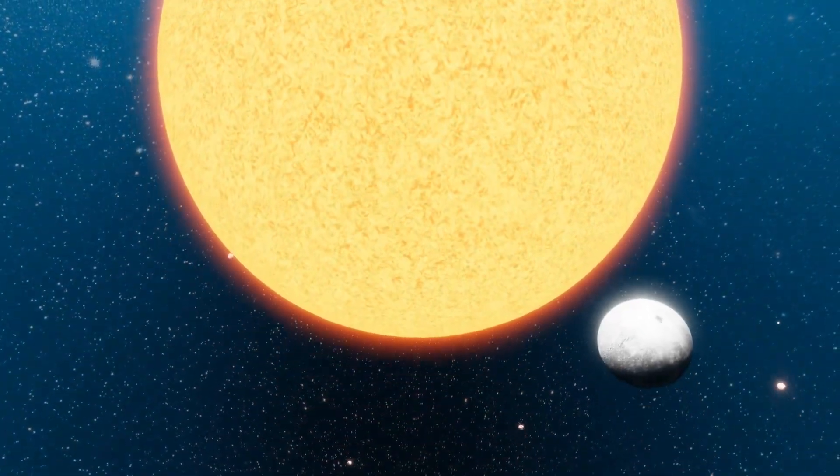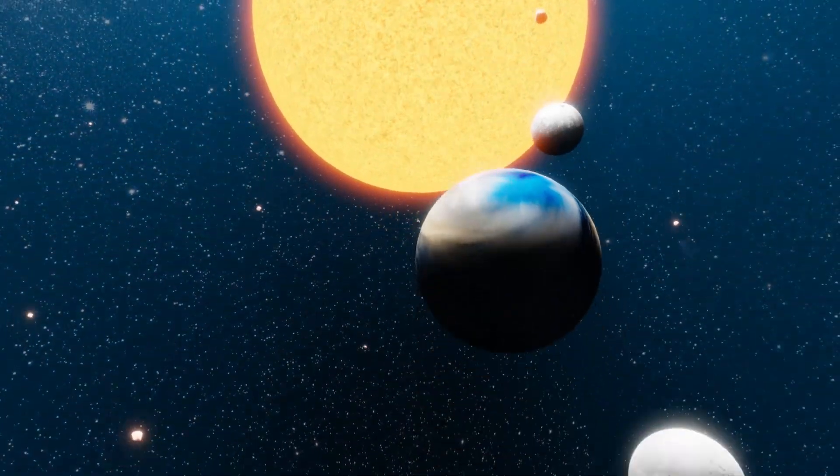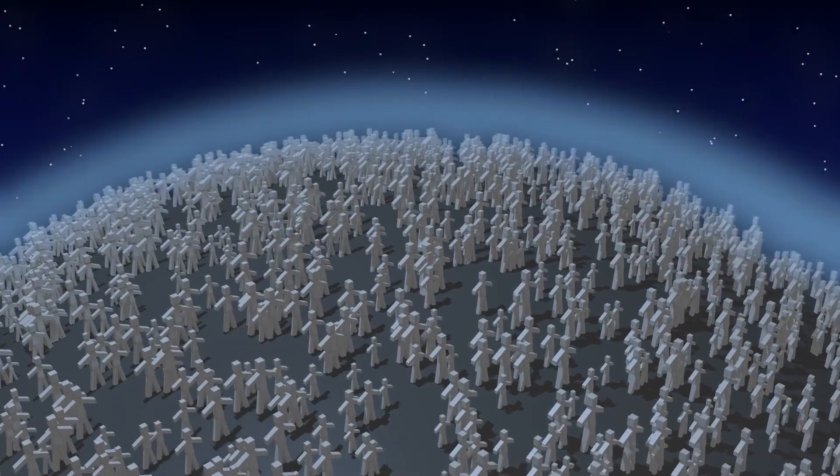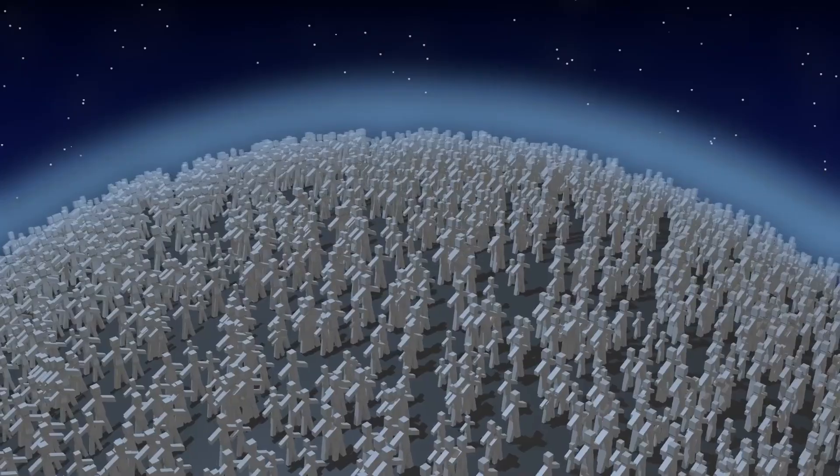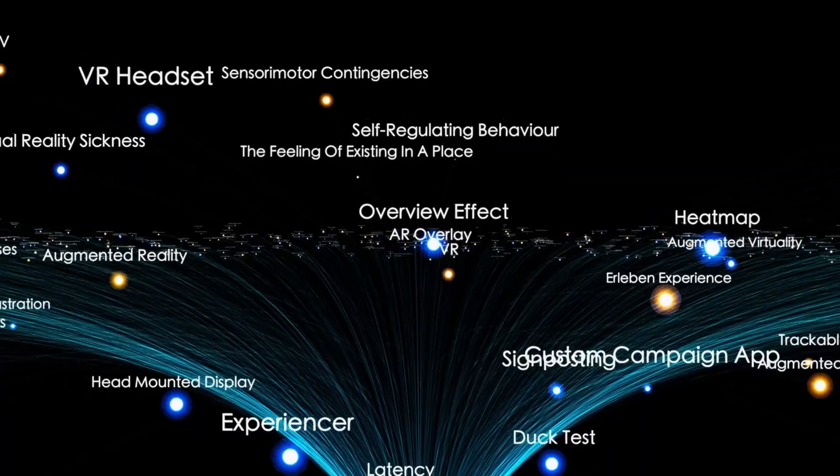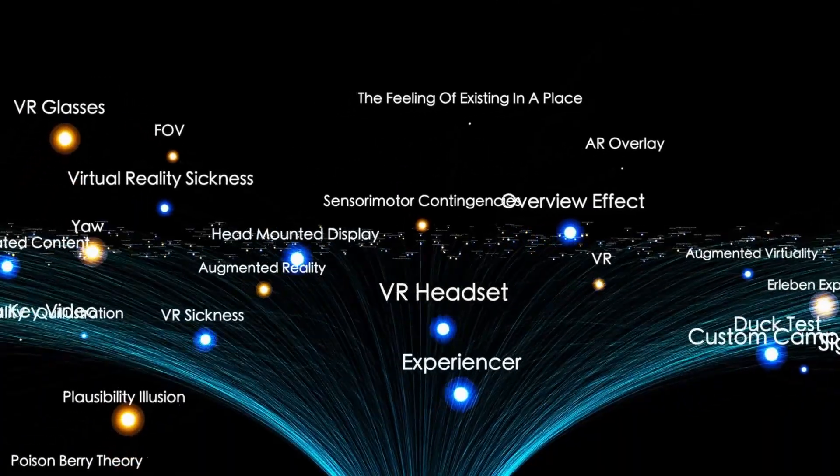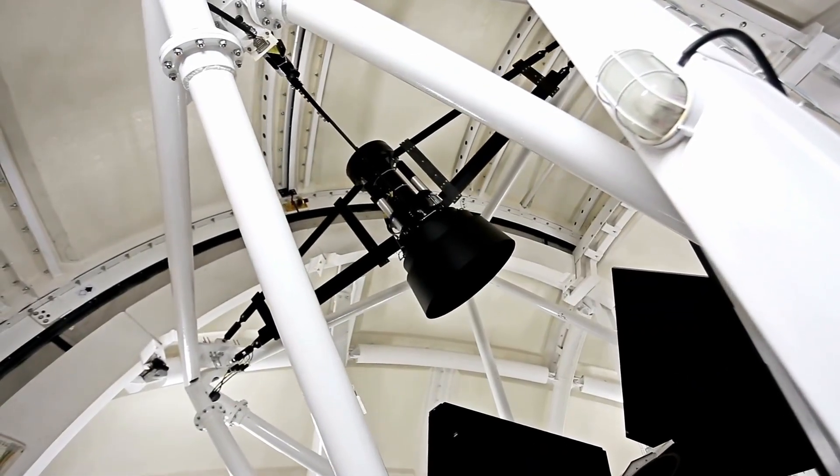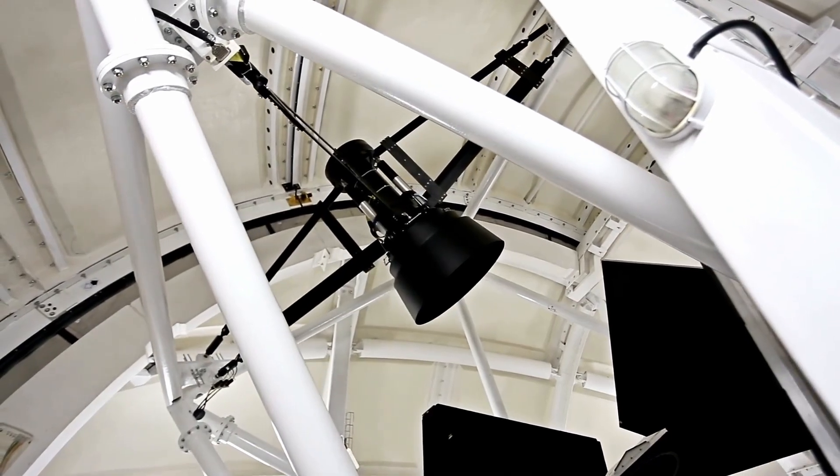And as if that weren't enough, artificial intelligence has joined the search, flagging patterns we don't understand, highlighting gravitational ghosts in the void between galaxies. The telescope was built to see farther than ever before, but what it found may be more than we're ready to face. If the past months have shown us anything, it's this: space is not silent, it's not simple, and it's far from solved.